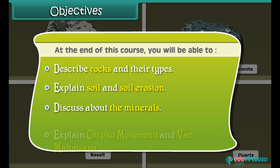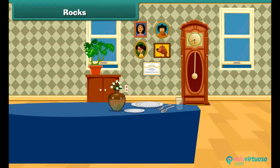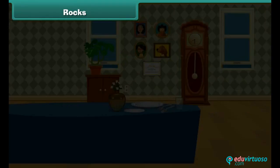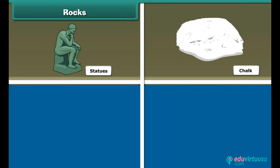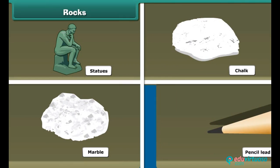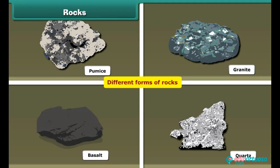You will also learn about the importance of the Chipko Movement and Van Mahotsav. As we can see, rocks are all around us. We can also see different things made up of rocks inside our house, in our yard, on the road, and everywhere. Do you know statues, chalk, marble, pencil lead, mountains, and soil are all different forms of rocks?